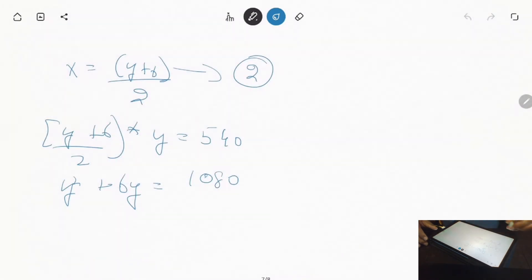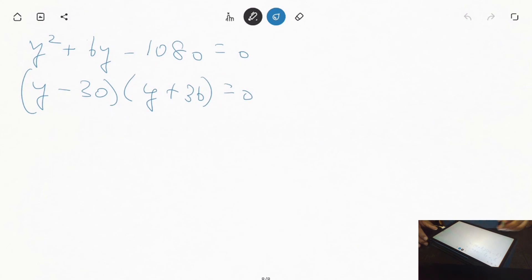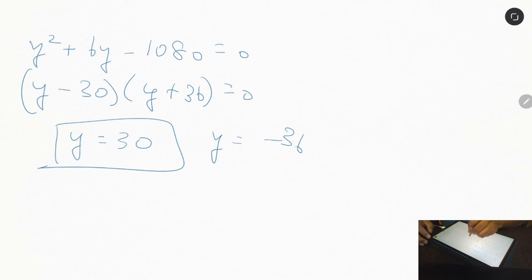So we get Y = 30 or Y = -36. But when we consider the value, because this is negative, this will be eliminated.